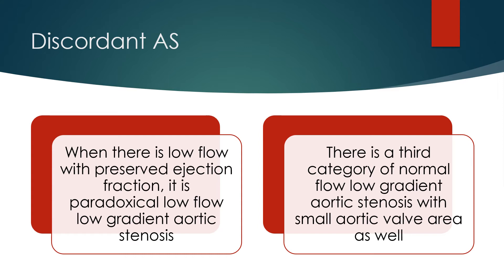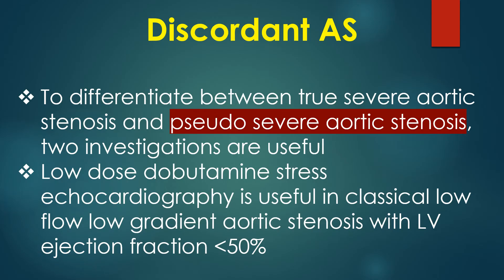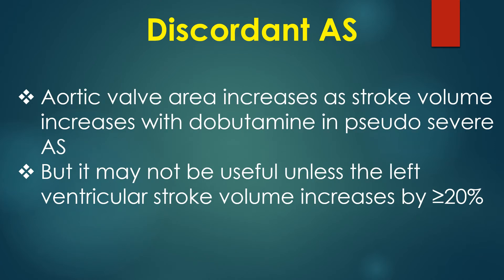There is also a third category of normal flow low gradient aortic stenosis with small aortic valve area. To differentiate between true severe aortic stenosis and pseudo severe aortic stenosis, two investigations are useful. Low-dose dobutamine stress echocardiography is useful in classical low flow low gradient aortic stenosis with LV ejection fraction less than 50%. Aortic valve area increases as stroke volume increases with dobutamine in pseudo severe aortic stenosis.